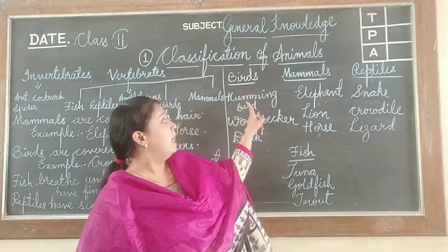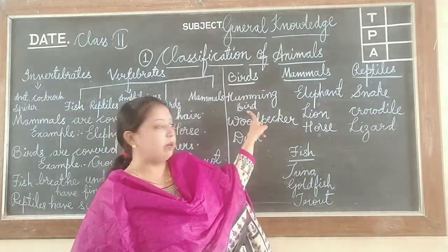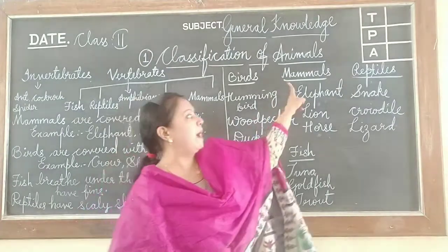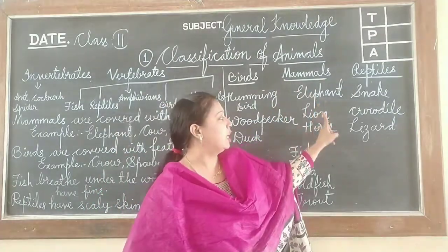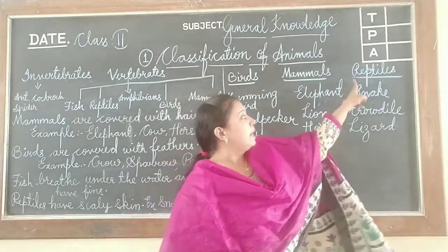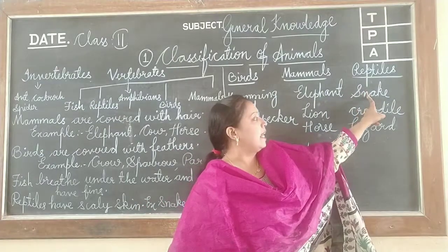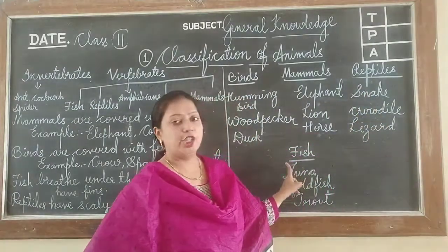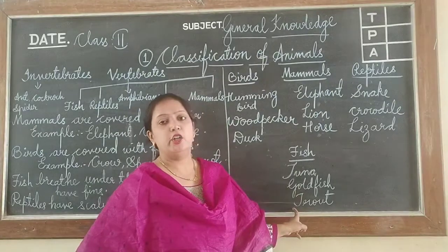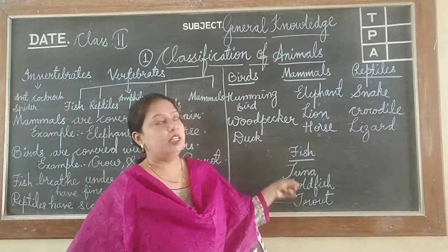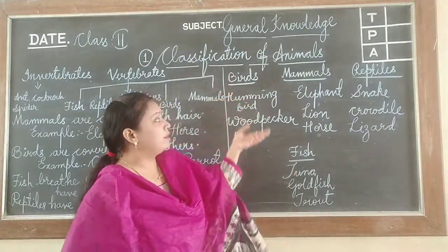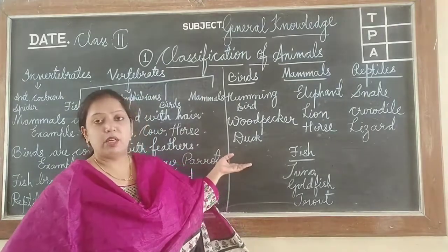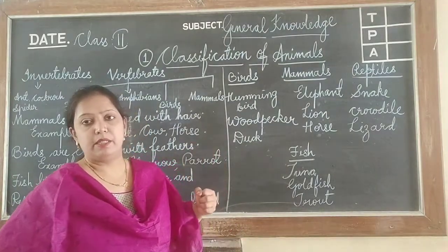So, what comes under birds? Hummingbird, woodpecker, duck. Mammals: elephant, lion, horse. Reptiles: snake, crocodile, lizard. Fish: tuna, goldfish, trout. In this way, the classification of animals is done.